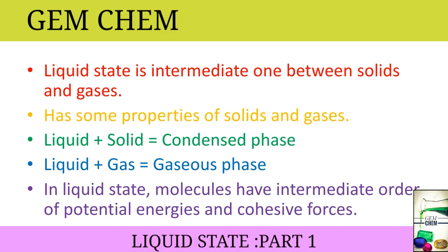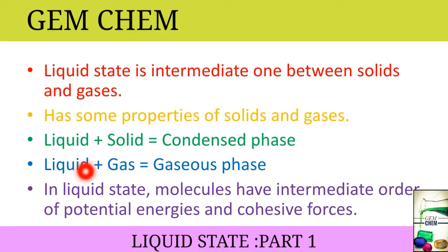Liquid has some properties of both solids and gases. When liquid and solid are present together, that phase is known as the condensed phase, whereas when liquid and gas are present together that phase is known as the gaseous phase. In liquid state, molecules have an intermediate order of potential energies and cohesive force — high cohesive force in solids, least or no cohesive force in gases, and an intermediate order in liquids.